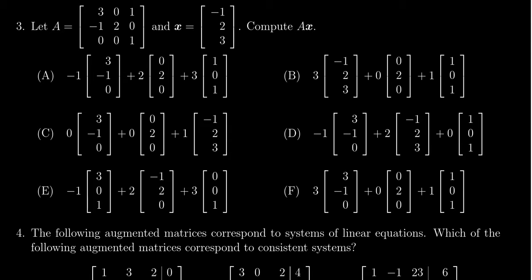In this question, we are given a matrix which is 3 by 3. It's given as 3, 0, 1 first row, second row is negative 1, 2, 0, and third row is 0, 0, 1. And we're given a vector in R3 whose entries are negative 1, 2, and 3.